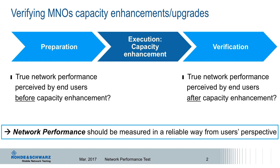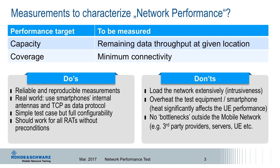Today I want to talk about the network performance test, which belongs to the blue layer and tests the pure network performance of the mobile network operator. If we want to verify capacity enhancements, we need to measure the true network performance perceived by end users before the capacity enhancement and after it, so we can compare whether the enhancement has been successful. Network performance should be measured in a reliable way from the user's perspective, because this is really what the user will finally experience.